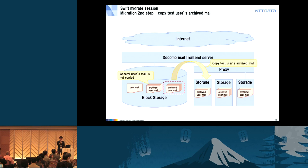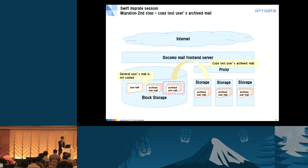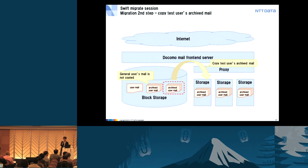In the second step, after deploying and testing Swift, we started to copy archived mail to Swift from block storage — but we copied only test users' archive mail. General users' mail was not copied to Swift. Test users accessed Swift when retrieving their archive mail, but general users still accessed block storage. We operated this step for about five months and conducted long-term stabilization tests.